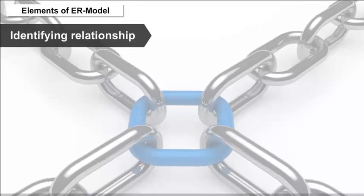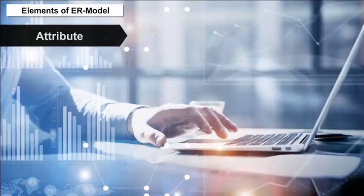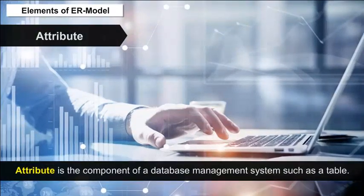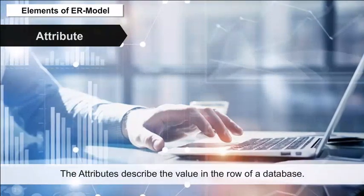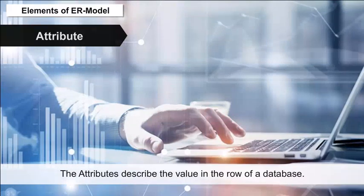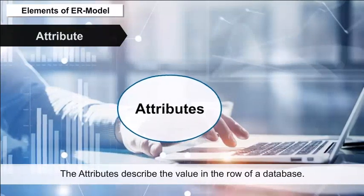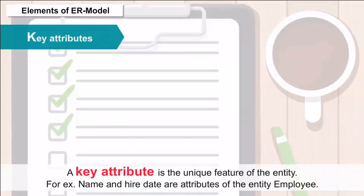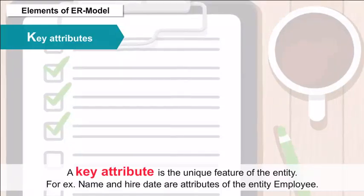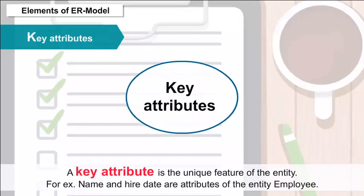Identifying Relationship — this is represented with a double-lined diamond-shaped box. Attribute — an attribute is the component of a database management system such as a table. The attributes describe the value in the row of a database. Attribute names are enclosed in ovals and attached to their entity type by straight lines. Key Attributes — a key attribute is the unique feature of the entity; for example, name and hire date are attributes of the entity employee, shown in ovals attached with straight lines.